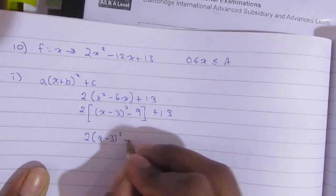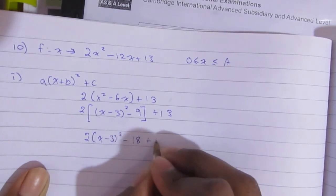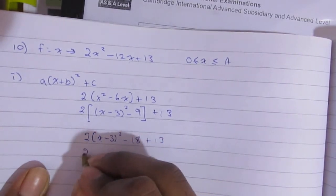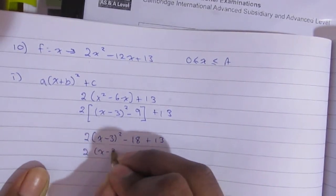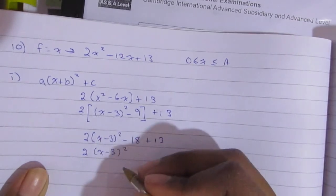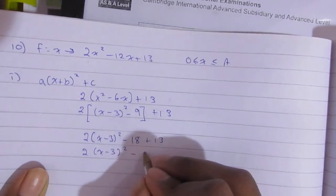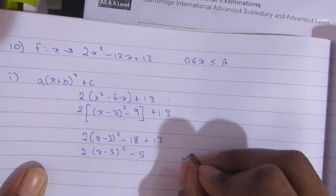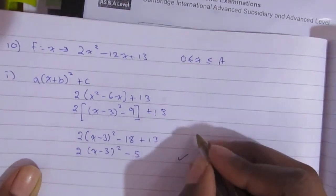After that, we're going to move in at the 2. So it's going to be 2(x minus 3) squared, and 2 times negative 9 is negative 18 plus 13, and then negative 18 plus 13 is negative 5. And that is it for this question, and that is a total of 3 marks.